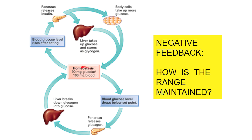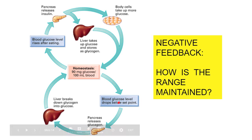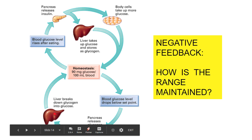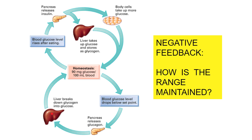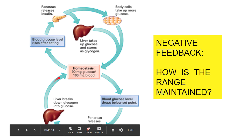Looking at the diagram, you have a range, and you just need to pay attention to which direction the arrows are going. If blood glucose is getting too high, the pancreas releases insulin, which causes the liver and cells to take up glucose. If it gets too low, we go the other way — the pancreas releases glucagon, which is a hormone telling your liver to break down stored glycogen back into glucose and release it back into the blood, bringing it back within the range.